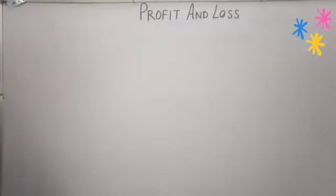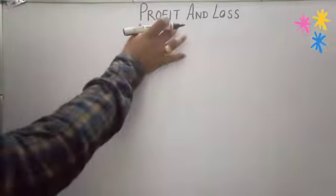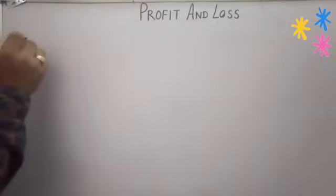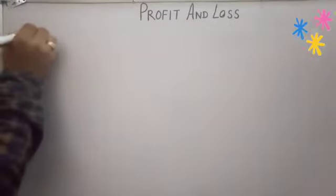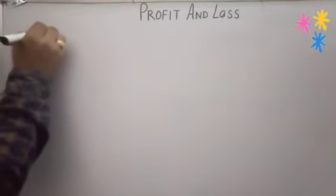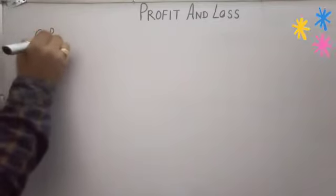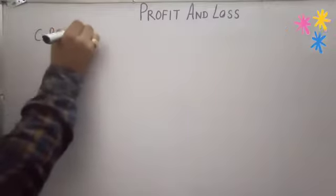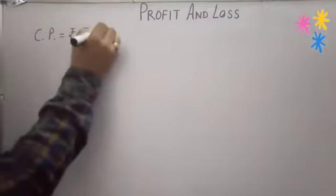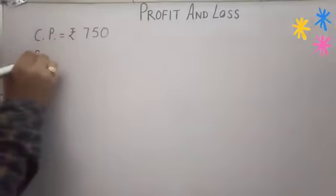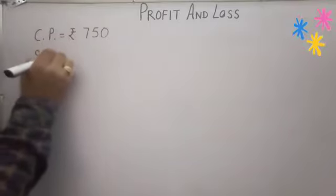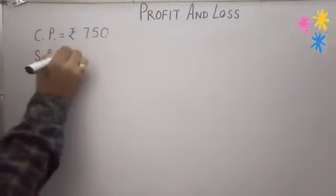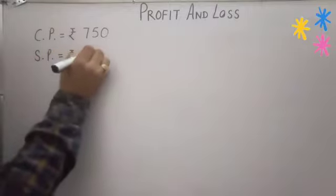Let's discuss about Profit with the help of an example. Suppose Cost Price, CP, is equal to Rs.750. And Selling Price, SP, is equal to Rs.830.